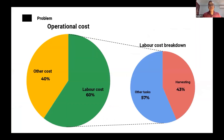In an urban farm, labor costs make up more than 50% of total operational costs. And as part of these labor costs, 43% of it consists of harvesting. So on an industrial scale, harvesting takes up quite a significant part of total operational costs.